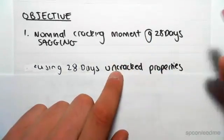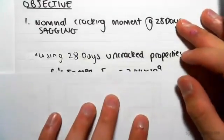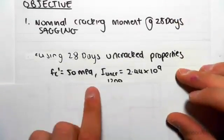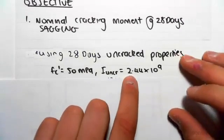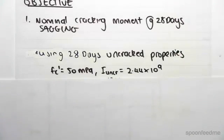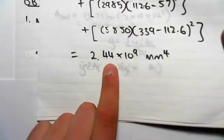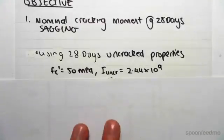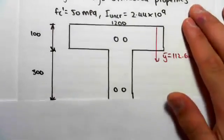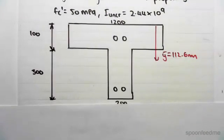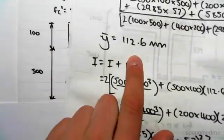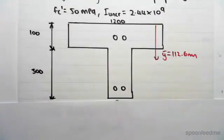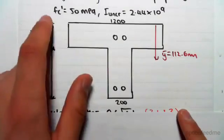The fc dash was 50 MPa. The I uncracked for sagging at 28 days was 2.44 times 10 to the 9 - we calculated that in previous videos. Showing you our structure, our T-beam, the centroid was at 112.6mm from the top. We also found that in previous videos. And these were the dimensions: 1200, 100, 300, 200.